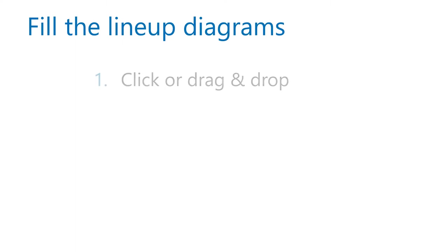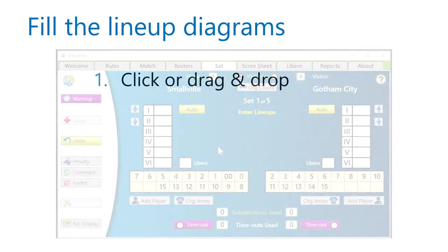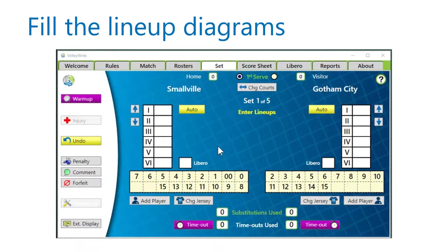There are different ways to fill the lineup diagrams — use whichever methods work best for you. You can use a clicking or drag-and-drop action between the diagrams and the benches. You can fill the positions in any order, and you can move players starting with the bench and ending on the lineup diagram, or vice versa.